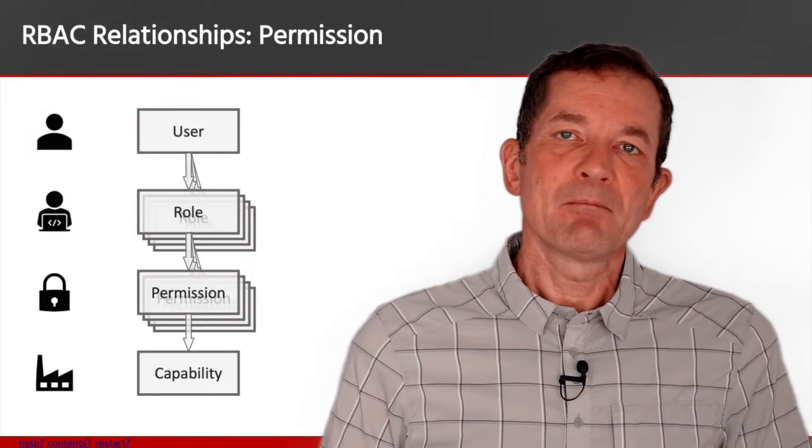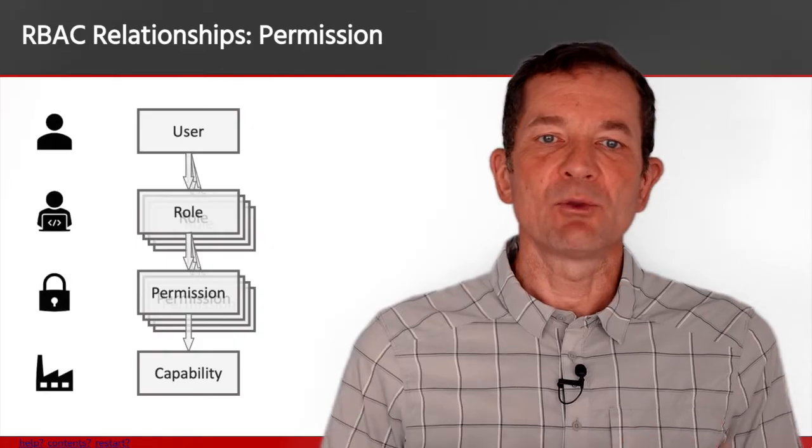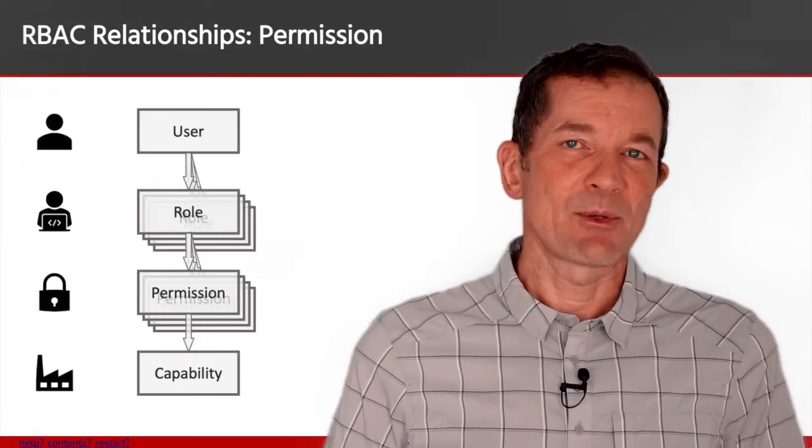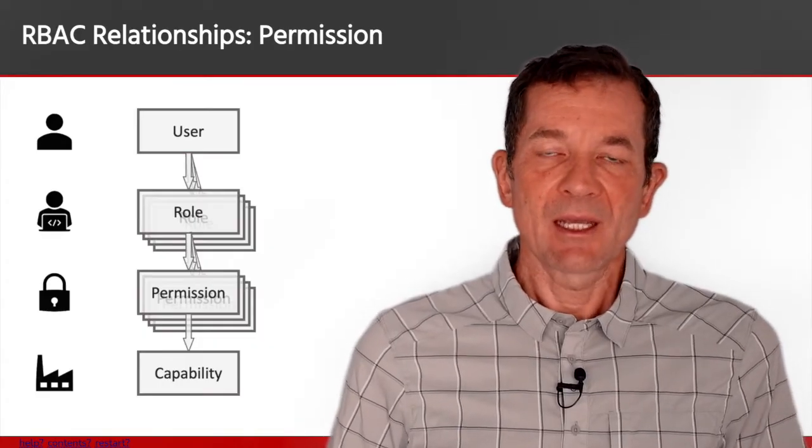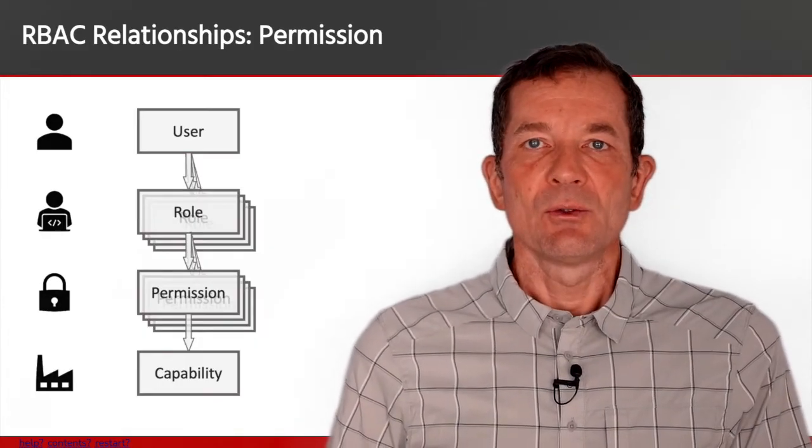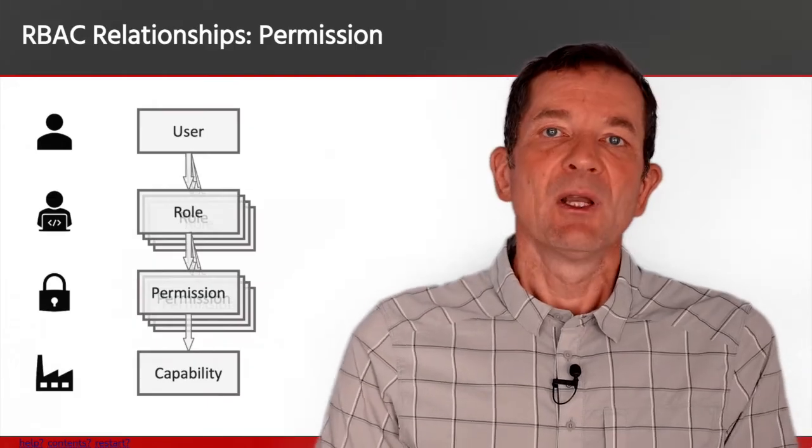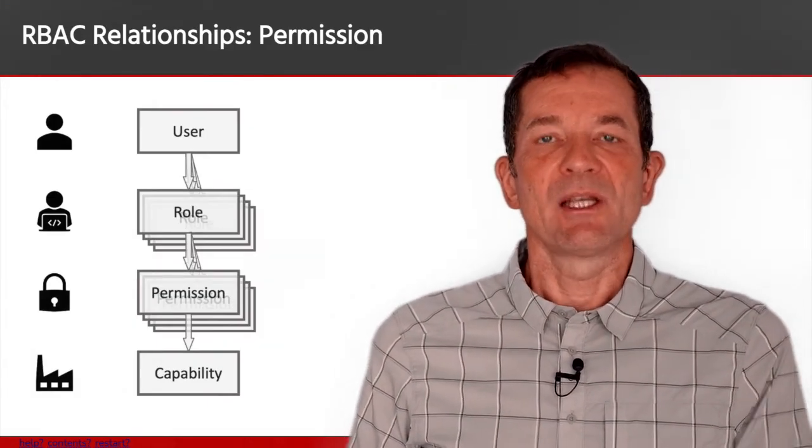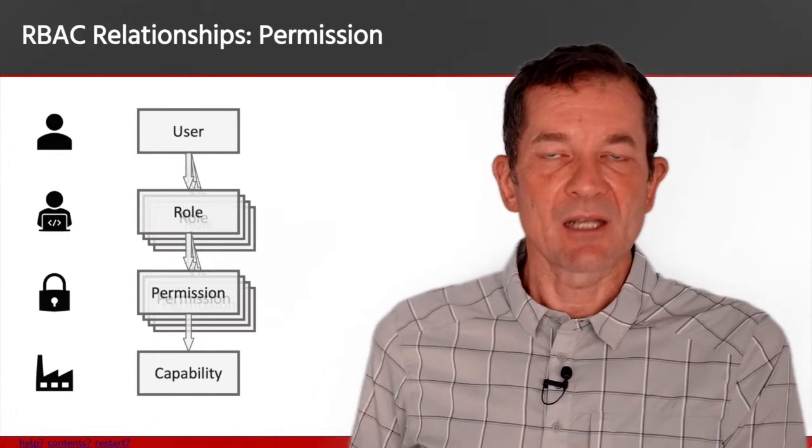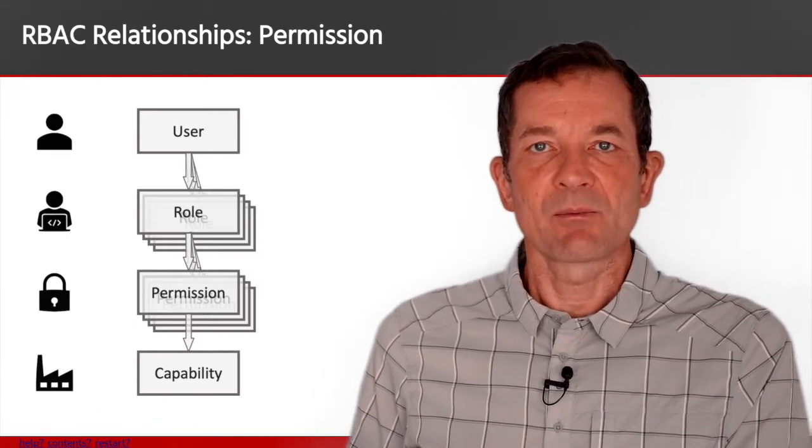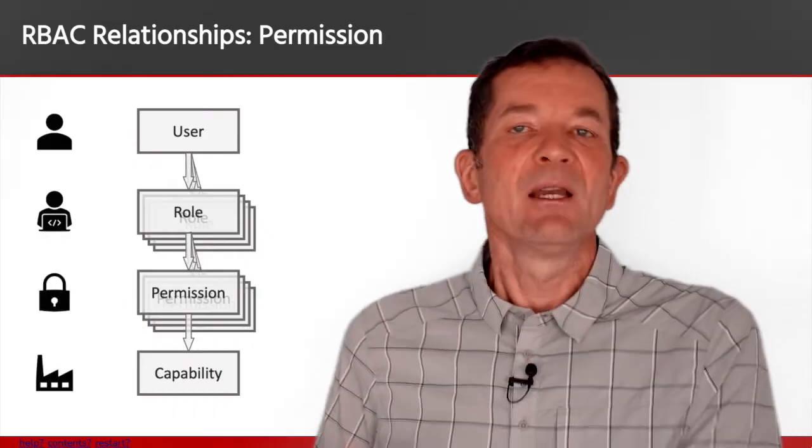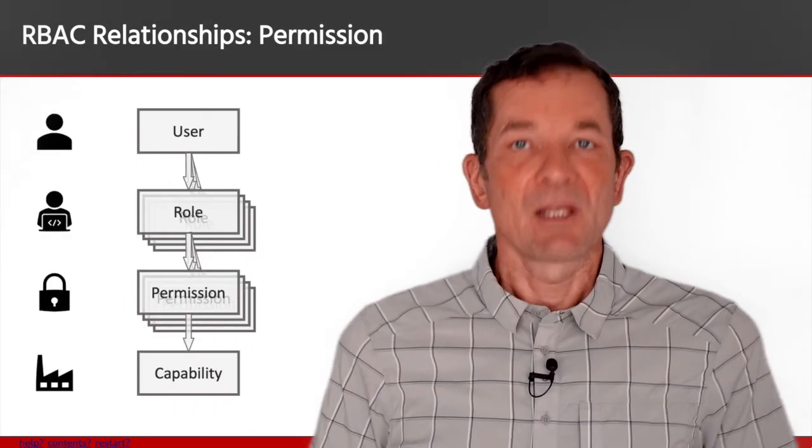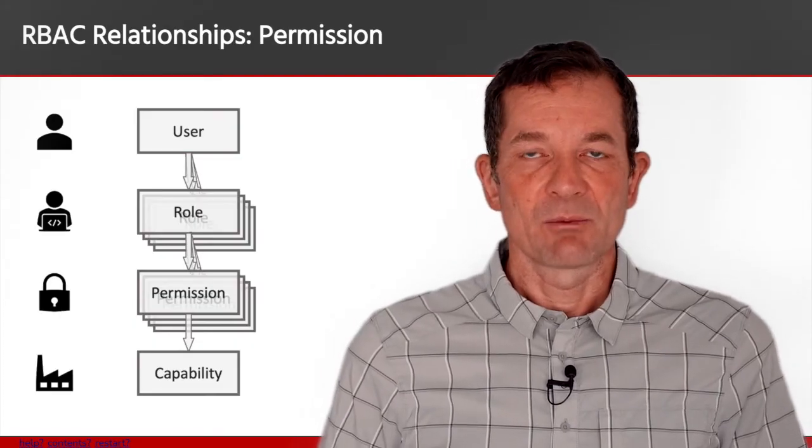The same relationship holds true between roles and permissions. The role of a customer representative might have a permission like getting access to order data, but also getting access to the history of interactions with a customer. You could see things like you called us last week and we resolved your issue, and that's another thing a customer representative should be able to do.